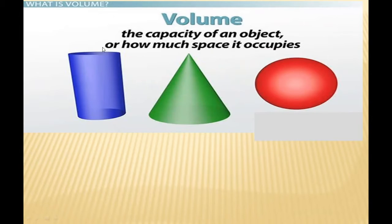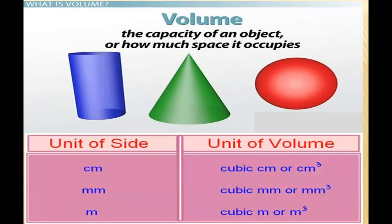The amount of space or amount of liquid that fits in a shape is called its volume. Let's begin with how to find the volume of a cuboid, and any 3D shape in general.